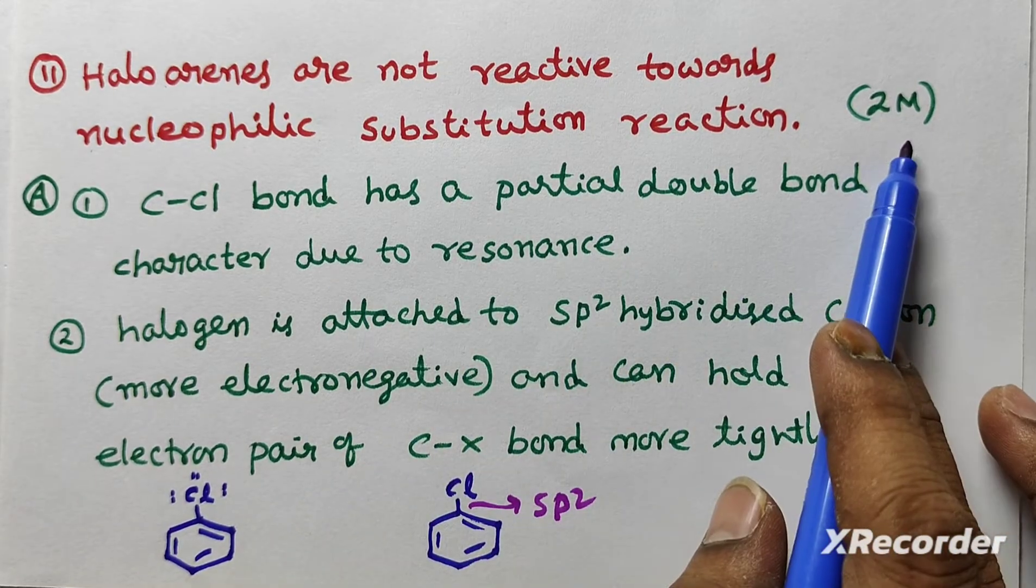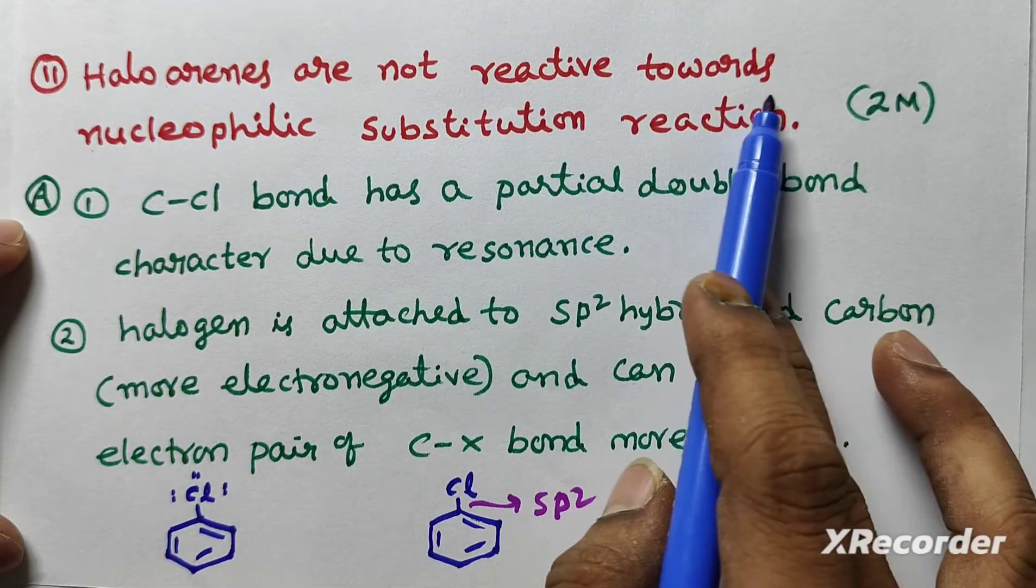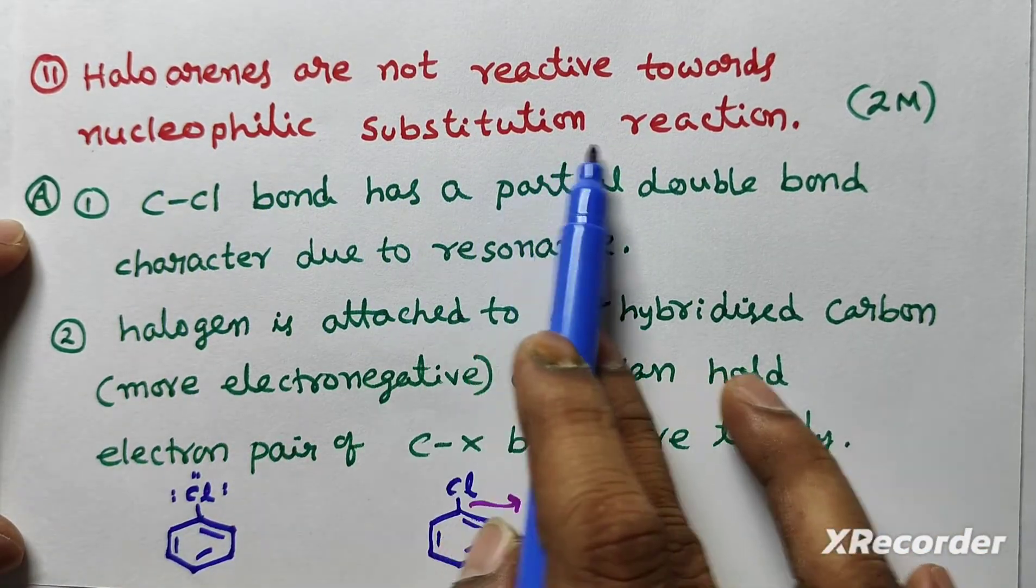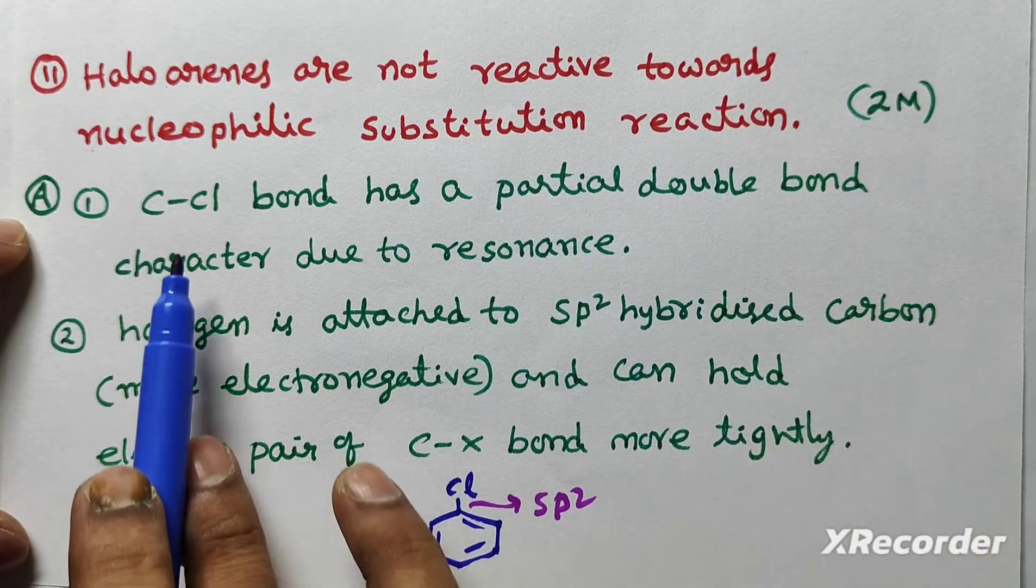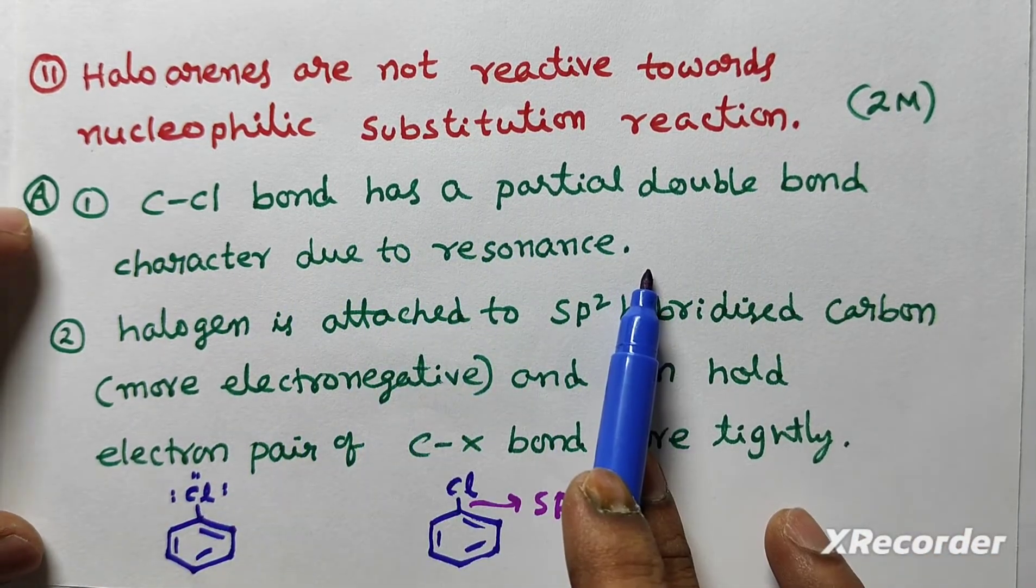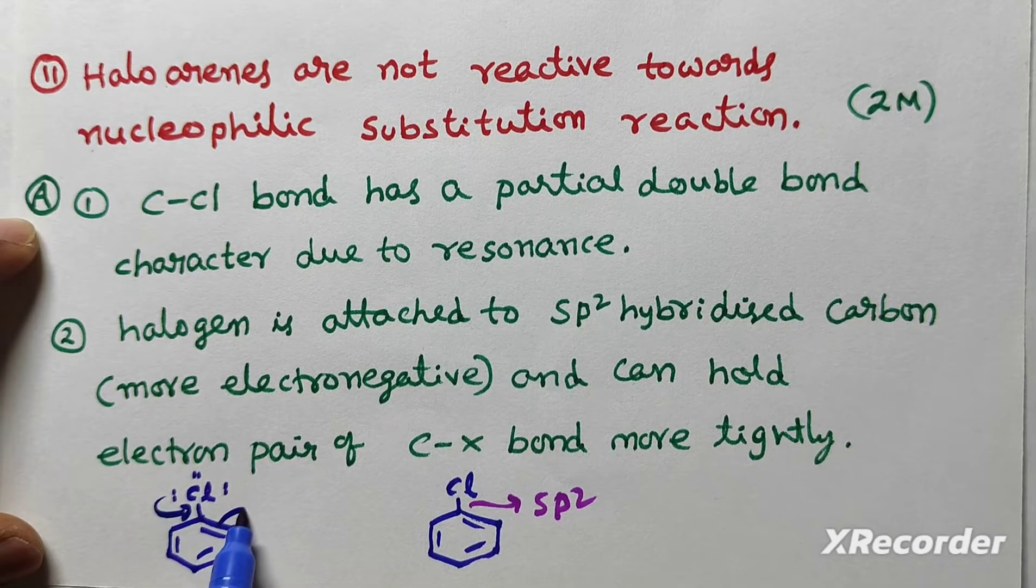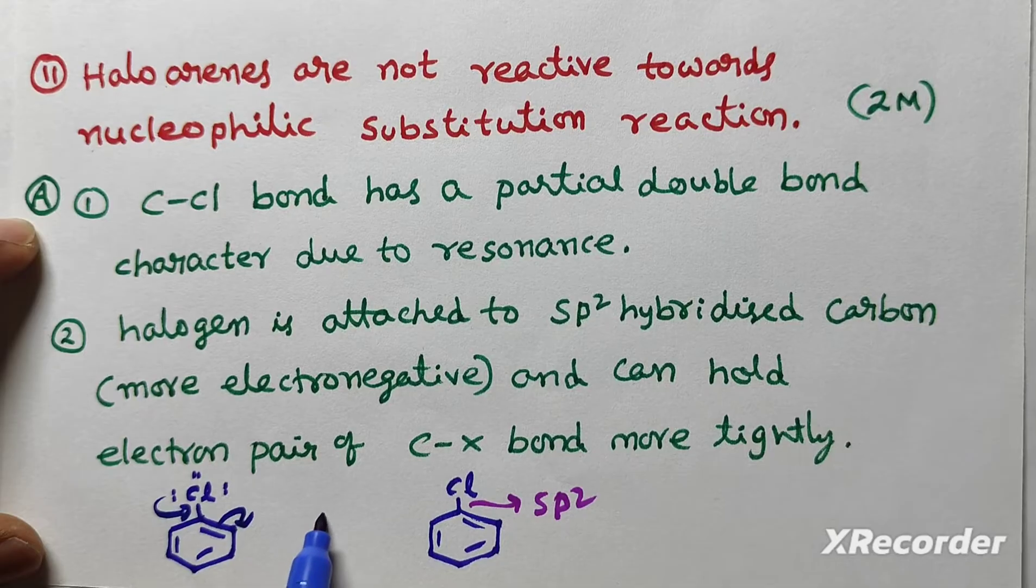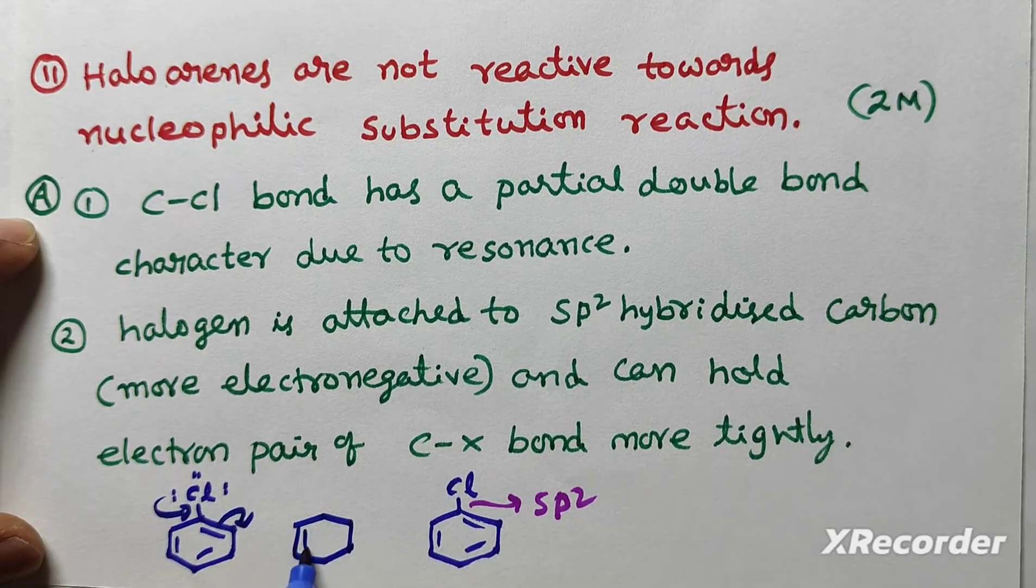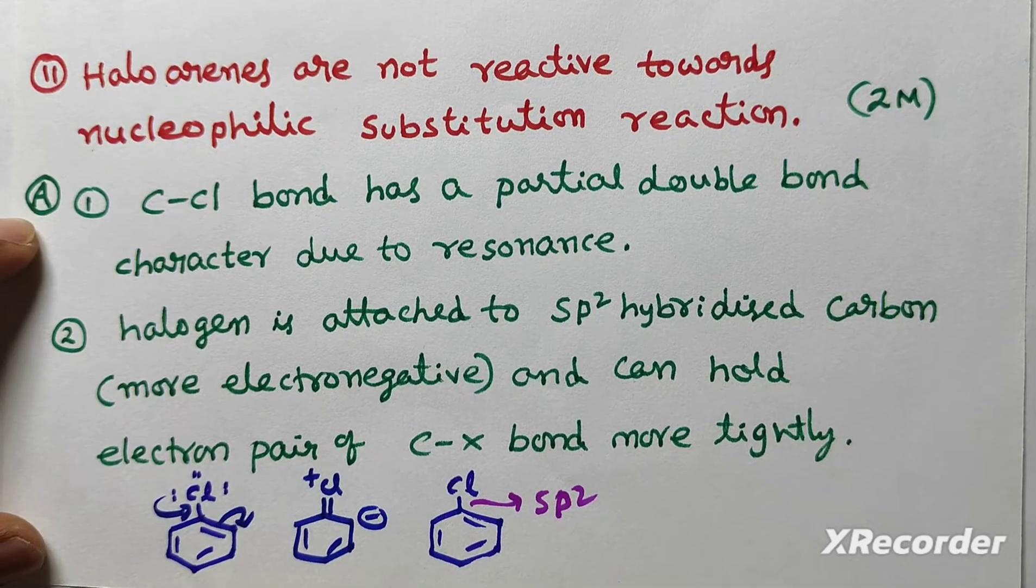Next question. This is two more questions. Important. Halobenzenes are not reactive towards nucleophilic substitution reaction. Give two reasons. First one. C-Cl bond has partial double bond character due to resonance. Just before I told you. Because of resonance, it has partial double bond character. Double bonds. Here plus. Here minus.